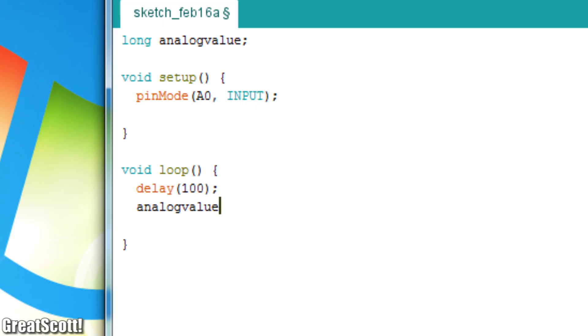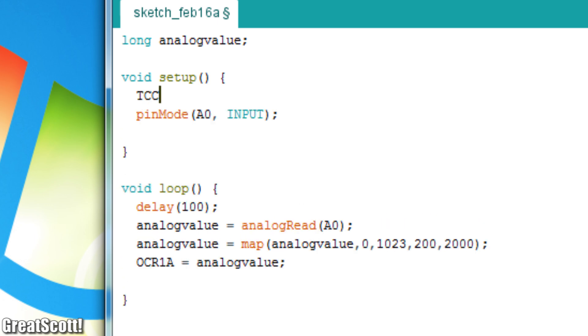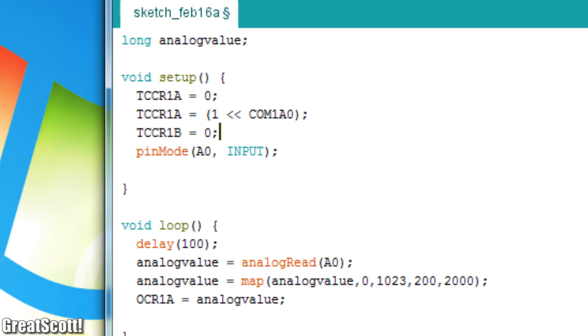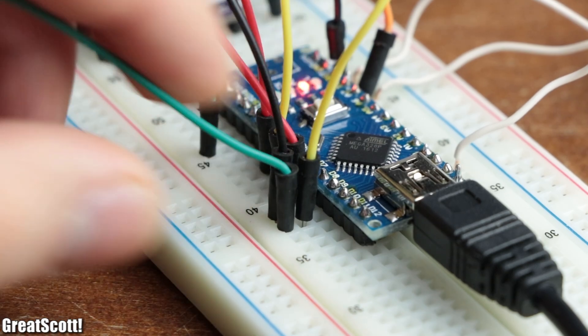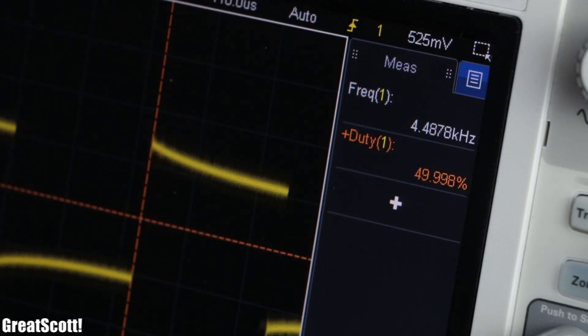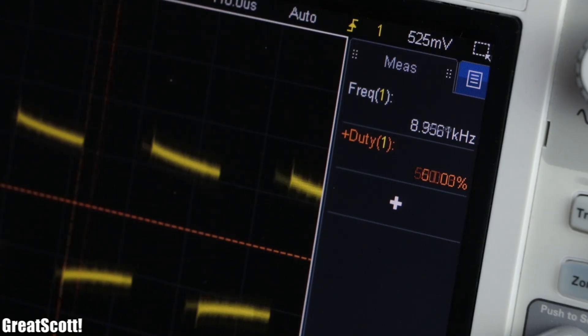For the Arduino code I simply created a loop that samples the potentiometer voltage and transforms it into a value for the timer 1 of the microcontroller, which according to how I set it up in the setup section of the code, then creates a PWM voltage on pin 9 with a duty cycle of 50% and a variable frequency.